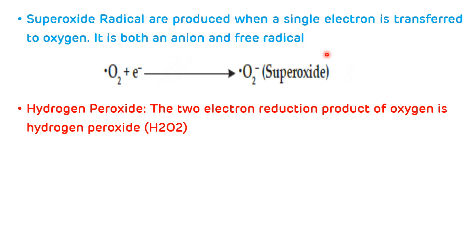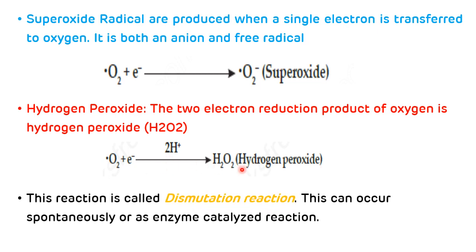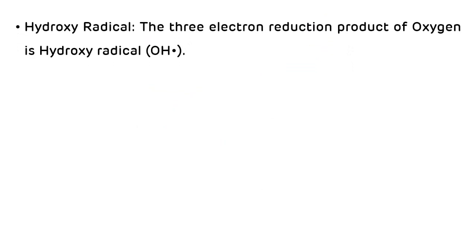Next, synthesis of hydrogen peroxide: if two electrons are transferred to oxygen, it leads to the synthesis of hydrogen peroxide. Hydrogen peroxide is the weakest among all reactive oxygen species. This reaction is called a dismutation reaction because it can occur spontaneously or as an enzyme-catalyzed reaction. This is how superoxide anion radical and hydrogen peroxide are synthesized.